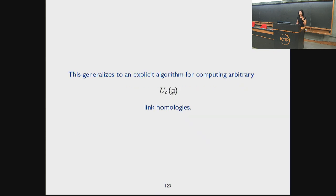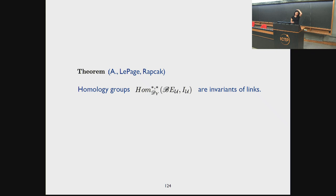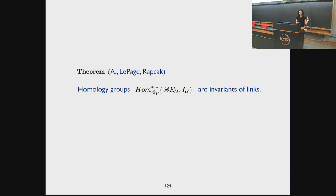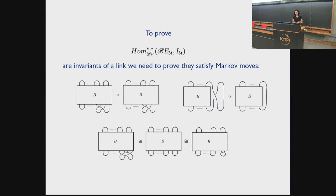This generalizes to an explicit algorithm for computing arbitrary UQ-GL link homologies. A theorem with Elise and Miroslav Rabchuk is that, in the paper that has appeared, for GL(1|1) and SU(2), the resulting invariants are link invariants. I should say that even though Heegaard-Floer theory has been solved, people did not solve it like this — the solution is new. In fact, it's motivated by the SU(2) solution, though we borrow some of the results they found. To prove you get link invariants, you need to prove that your invariants satisfy Markov moves.